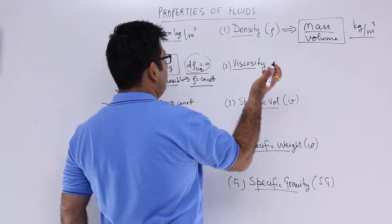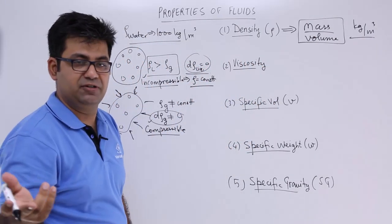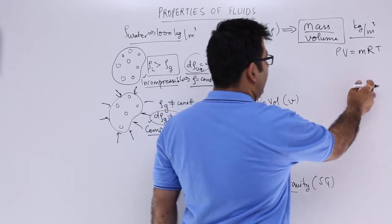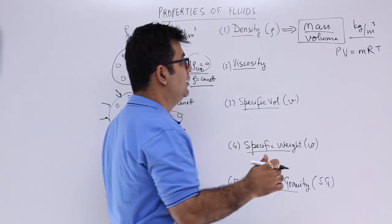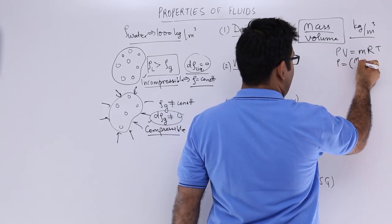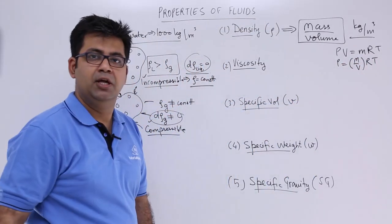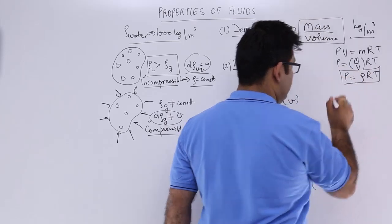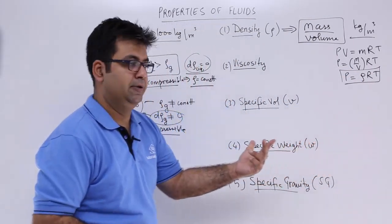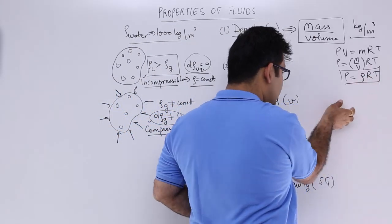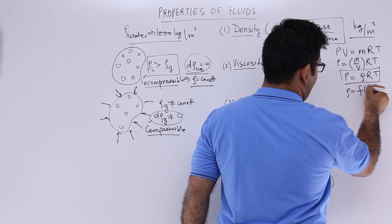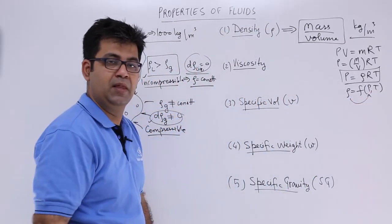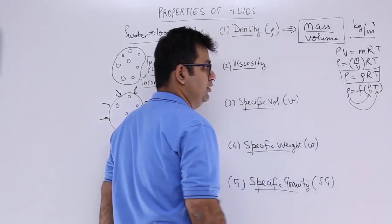So if you apply the ideal gas equation: PV = MRT, where capital R is the universal gas constant. If you take V to the other side, you get M upon V into RT. M upon V is rho, so P = rho × R × T. That is how density and pressure are linked. Density is a function of pressure and temperature. There is a slight dependence on temperature also, but not so much.